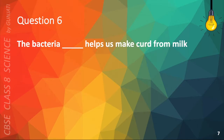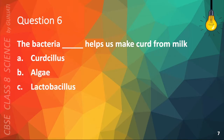Question 6. The bacteria blank helps us make curd from milk. A. Curdicillus, B. Algae, C. Lactobacillus, or D. Cows.